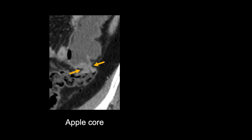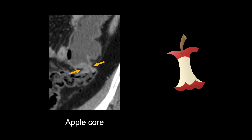The mass shown on this sagittal image has the characteristic appearance of an apple core lesion, a term used to describe colon cancers that narrow the bowel lumen. This is an even more subtle example of an obstructive colon cancer, but the dilated colon leading into the mass should make us suspicious of even subtle wall thickening.